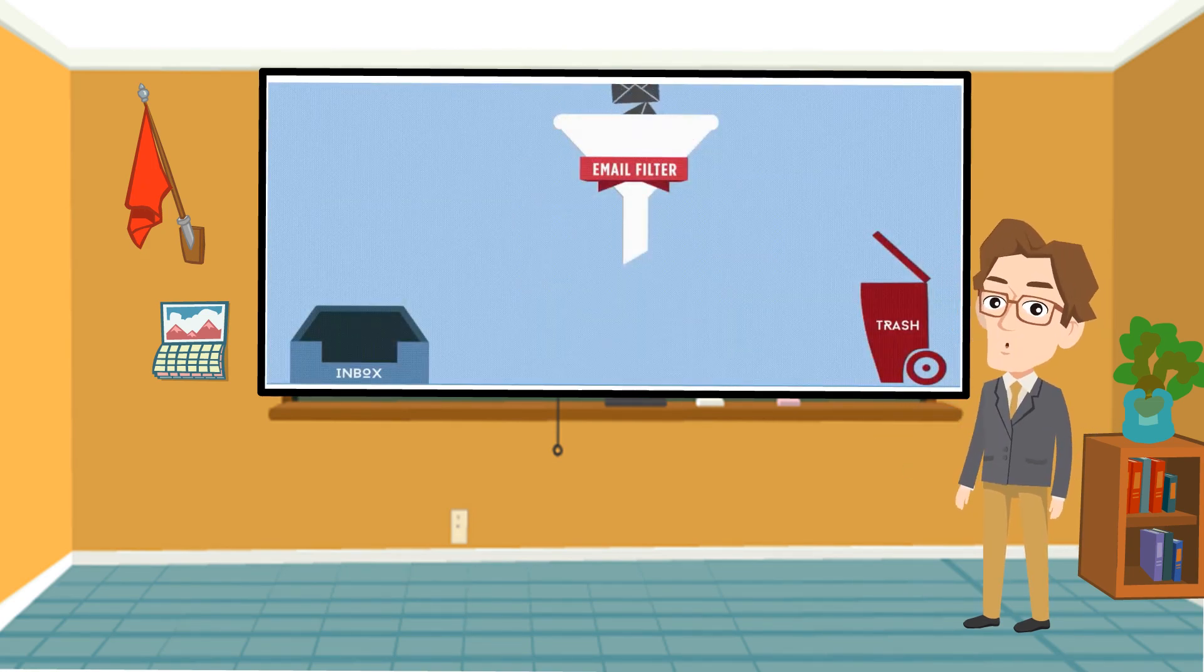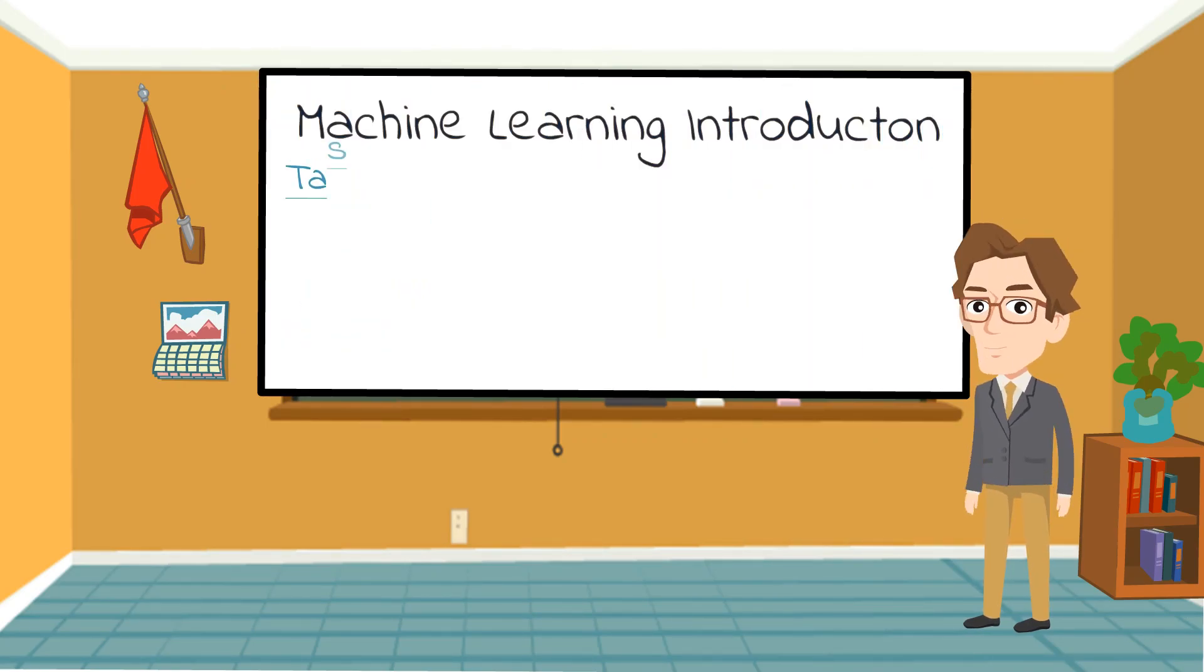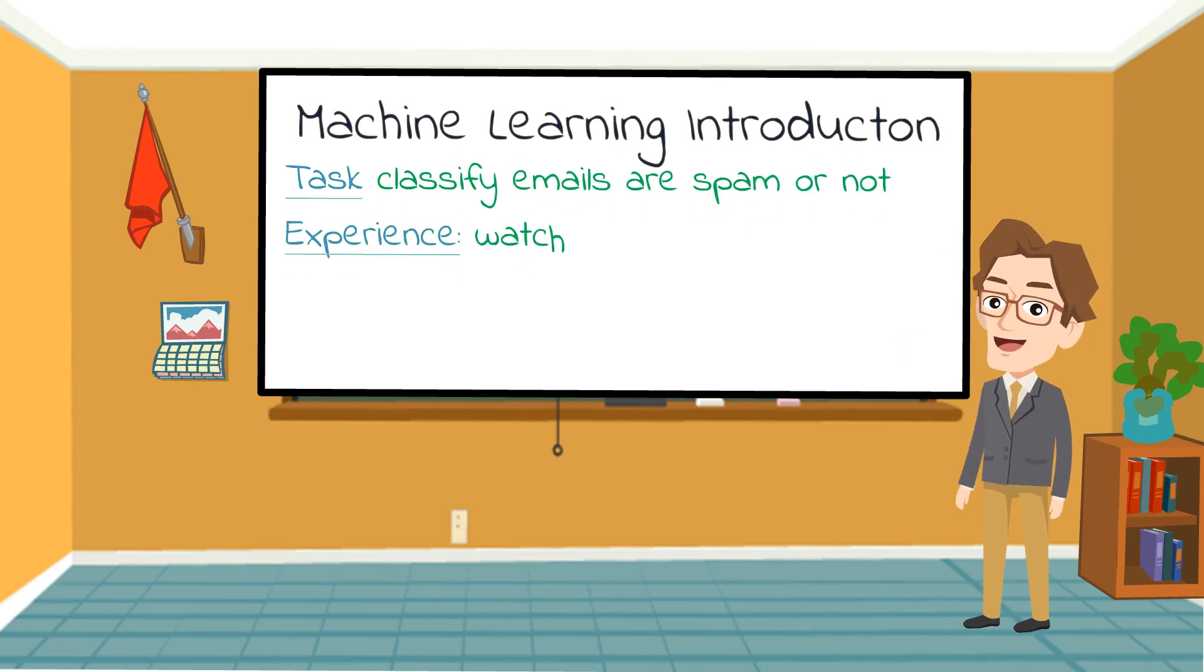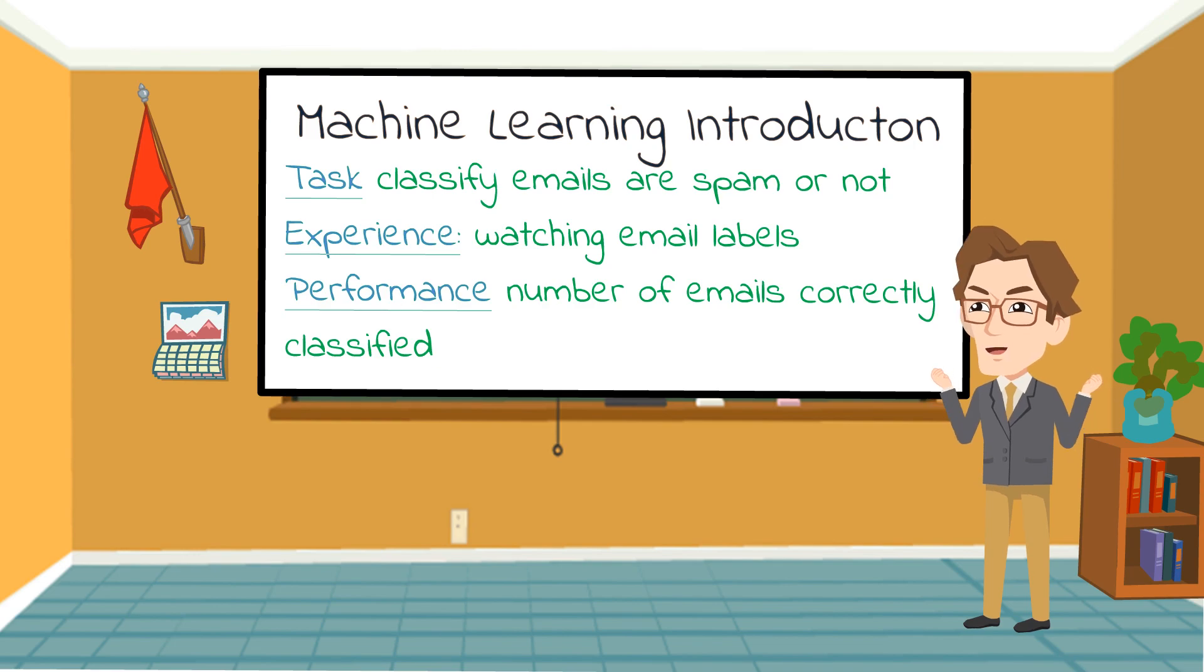Suppose you want your machine to watch emails and mark them as spam or not spam, learning how to better filter spam. For this example: classifying emails as spam or not is the task, watching your labeled emails is the experience, and the number of emails correctly classified is the performance measure.